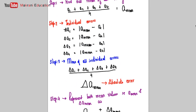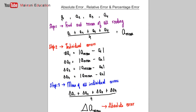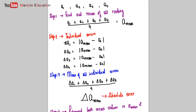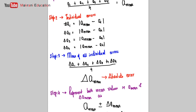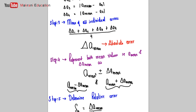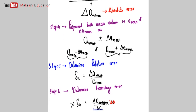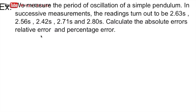Let us revise all the steps. Readings are given. Step 1: find A_mean. Step 2: calculate individual errors. Step 3: take the mean of all individual errors — that gives absolute error. Step 4: represent the reading as A_mean plus or minus delta_A_mean. Step 5: find relative error as delta_A_mean over A_mean. Step 6: multiply by 100 for percentage error. Now let us see an example on relative error, absolute error, and percentage error.